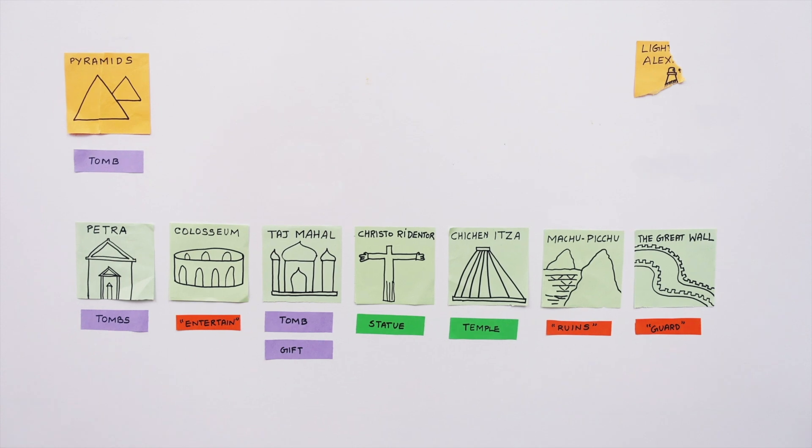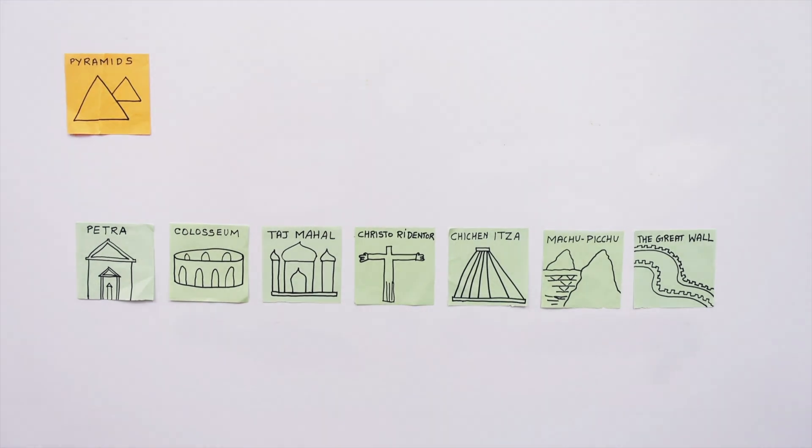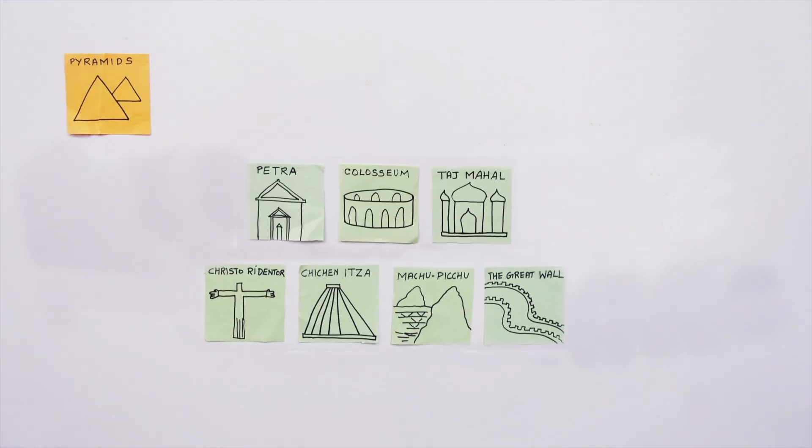The Pyramids of Egypt is the oldest and only surviving ancient wonder today. That leaves us with seven new wonders of the world and one really strong ancient wonder.